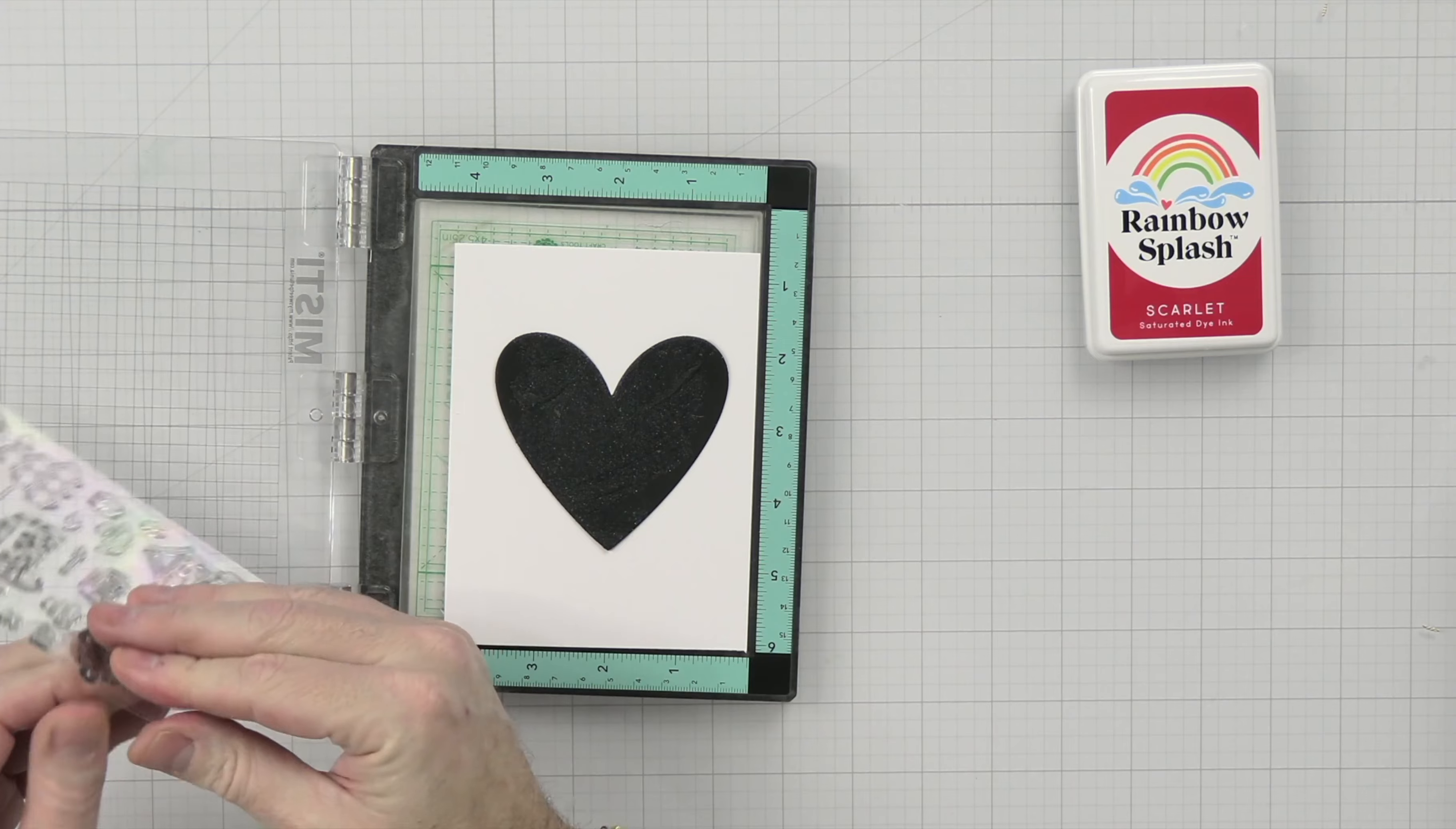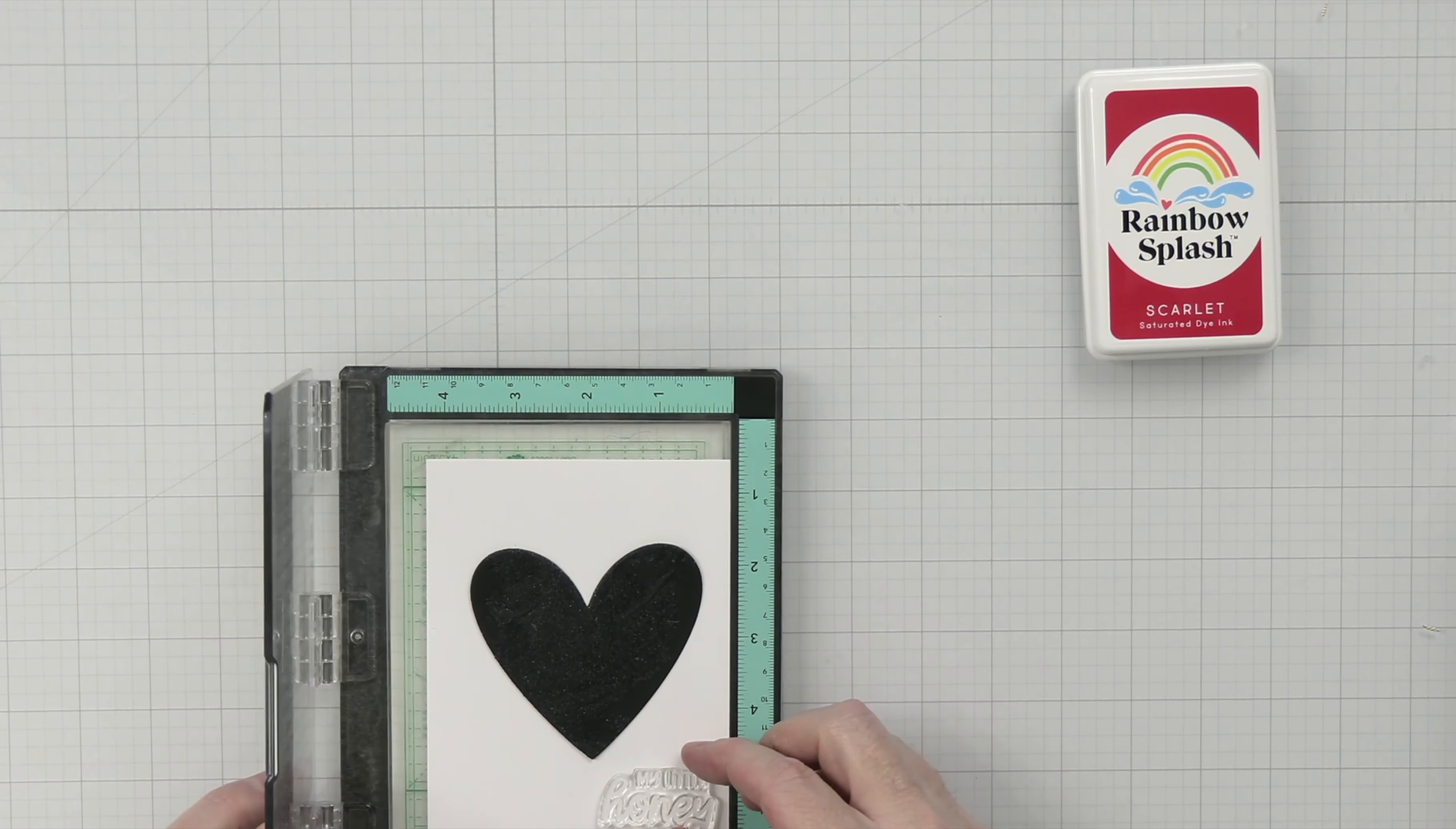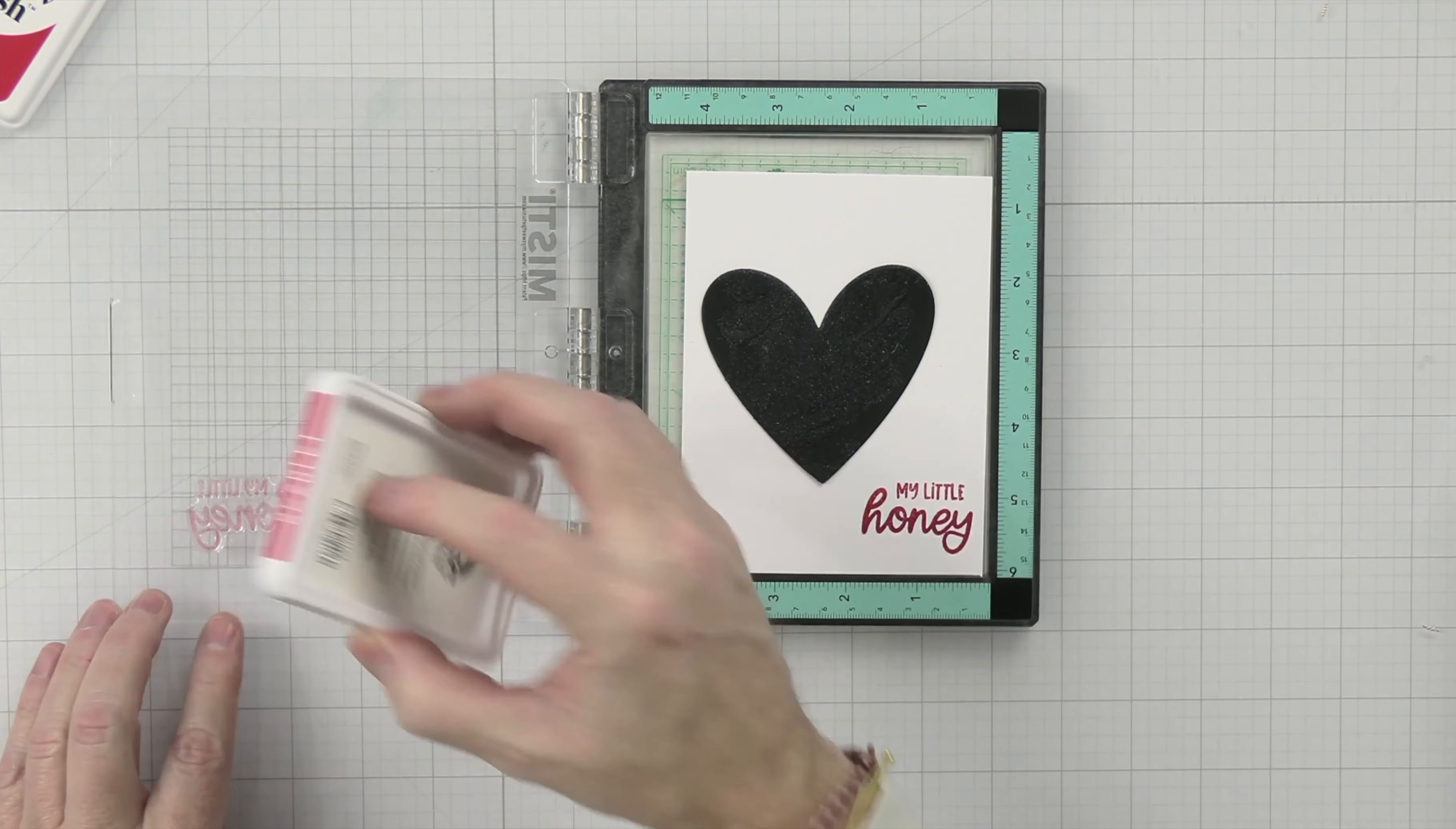I want to use the sentiment 'my little honey,' super cute. My head might get in the way, I apologize, but I just want to make sure this is straight. Yeah, that looks good. So I think right there is where I want it. And then I'm just going to use a red that I have here in my stash. And let's just stamp it twice just to make sure.